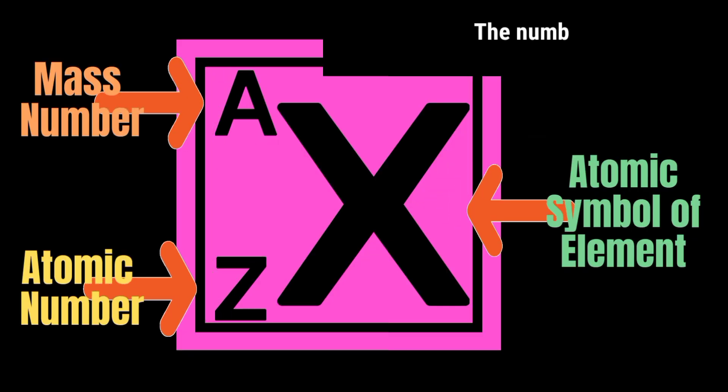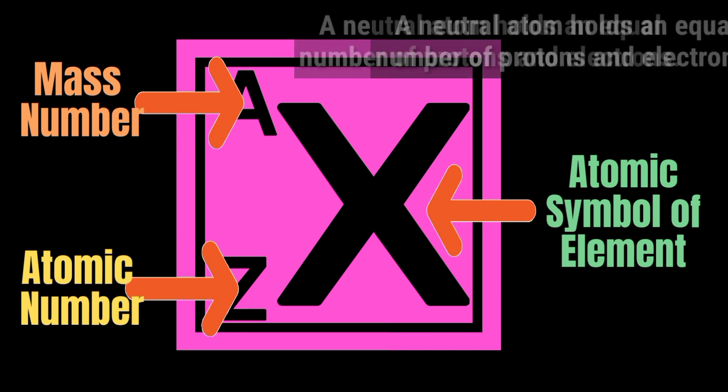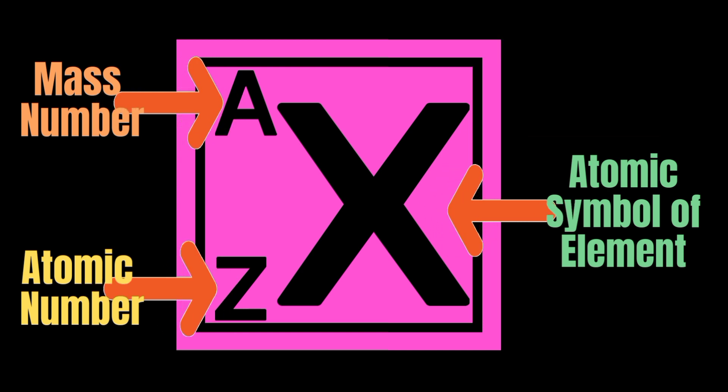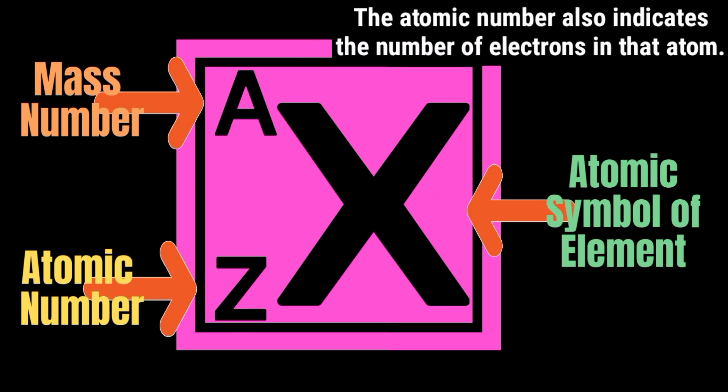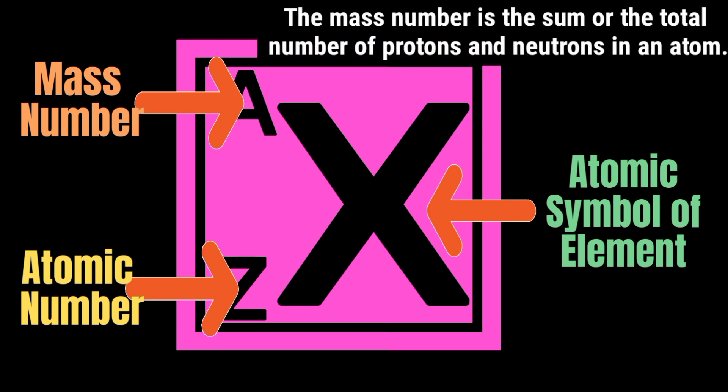The number of protons in an atom is called the atomic number of an element. A neutral atom holds an equal number of protons and electrons. The atomic number also indicates the number of electrons in that atom. Meanwhile, the mass number is the sum of the total number of protons and neutrons in an atom.